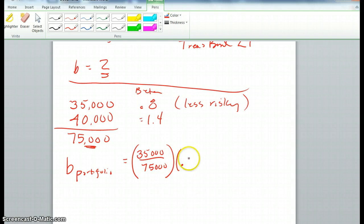And we're going to add the portion of our total investment of the second stock times that stock's beta. And that's as easy as it gets. And we can then calculate the portfolio of the whole beta, and that will give us information about the riskiness of our portfolio.